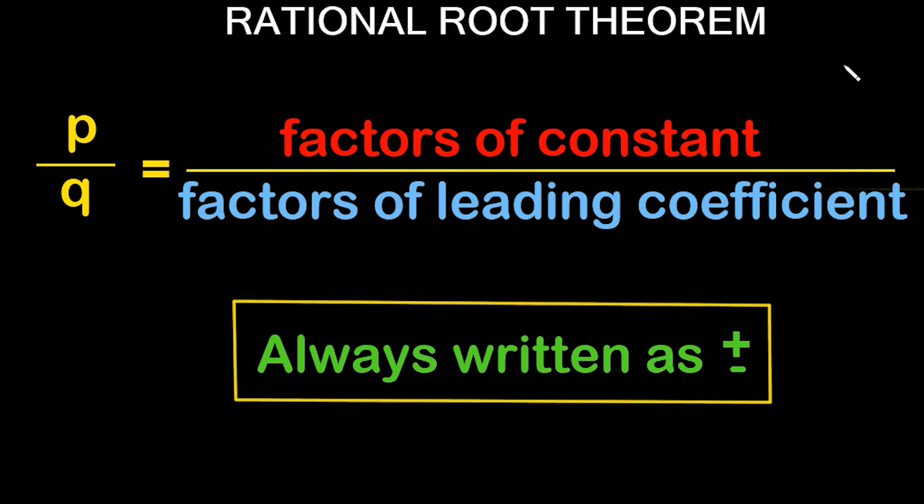In this example we're going to be talking about the rational root theorem. All the rational root theorem is is simply trying to find possible rational roots of a polynomial. When you do this you'll come up with a list of possible rational roots, but that does not mean they are for sure going to be roots of that polynomial — it just means there is a possibility that they could be a root.